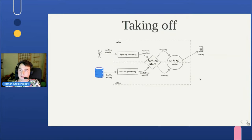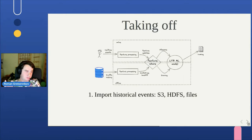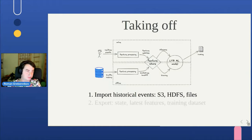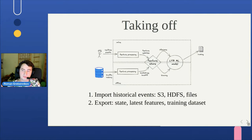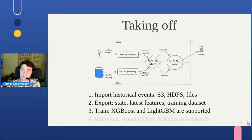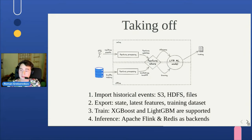To start, you only need historical data of your traffic dumps so they can be processed, plus some configuration describing how historical events are mapped into machine learning features. You export the training dataset, train your model, and switch to online mode. We use Apache Flink to do all the online processing.